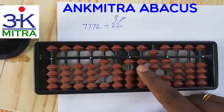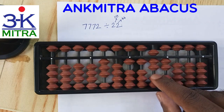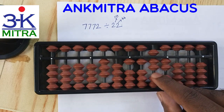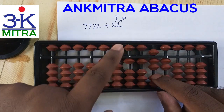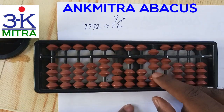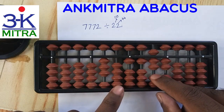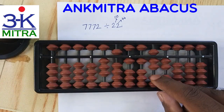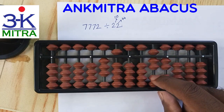Since 11 is smaller than the divisor 22, we move to the next rod. The number formed up to this rod is 117. From 117 we can subtract 5 times 22, which is 110, as written on the paper. So I take 5 on the corresponding second rod of the answer set, then subtract 110 from 117. The second step is done.